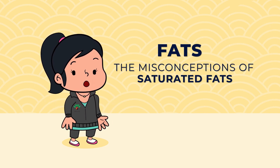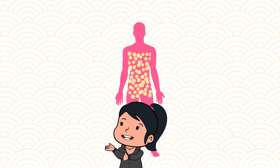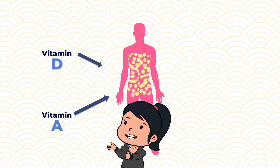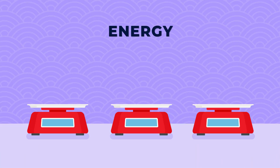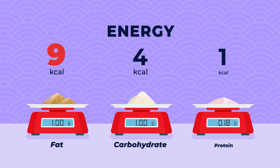Let's start by getting to know what is fat? Fat is a source of essential fatty acids which the body cannot make on its own, and it helps the body absorb fat-soluble vitamins A, D, E and K. Did you know that a gram of fat provides 9 calories of energy compared with 4 calories of carbohydrate or protein?